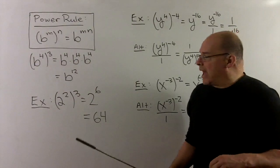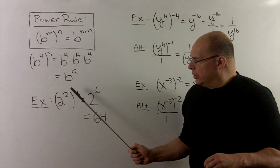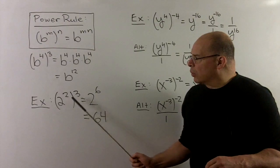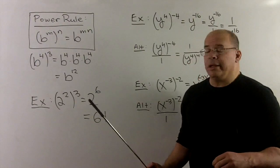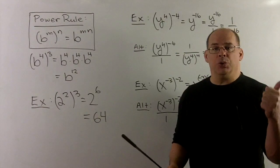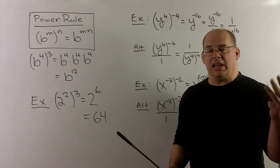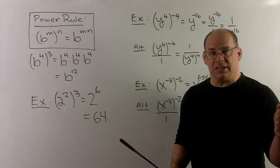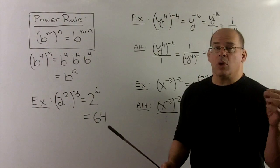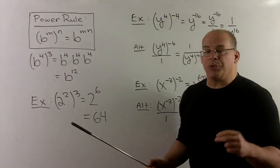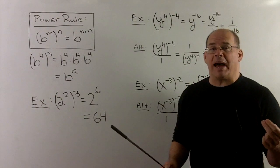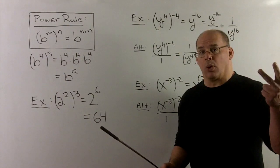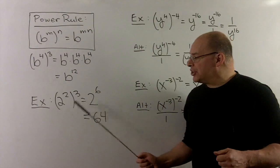For a numerical example, let's take two squared and raise that to the third power. Using the rule, that's just going to go to two to the sixth. Let's count that up: two, four, eight, sixteen, thirty-two, and for six twos we get sixty-four. Of course, we could do this directly: two squared is just four, and then we multiply four by itself three times — four, sixteen, sixty-four. So that checks out.